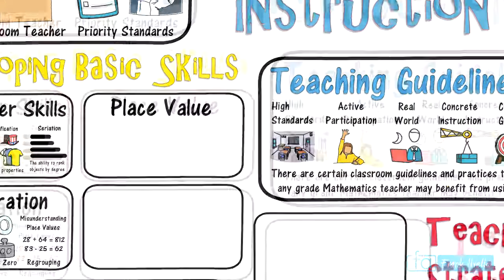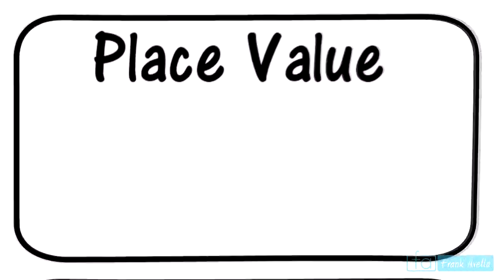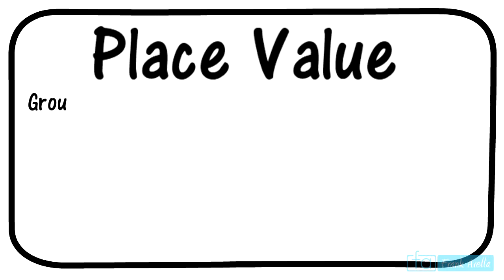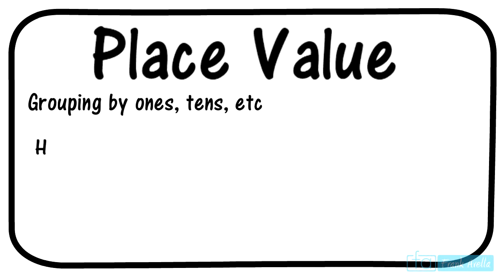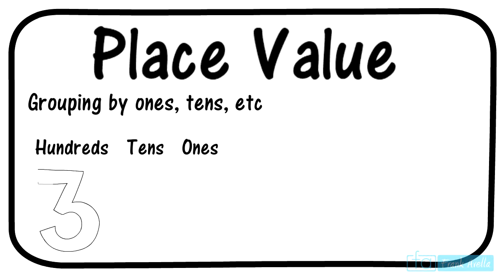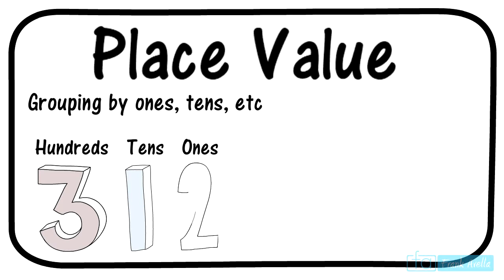This leads into the next topic: students can be taught through groupings of ones, tens, hundreds, and so forth. Take the number 312, for example. Students should know that the 3 is in the hundreds place, the 1 in the tens place, and the 2 in the ones spot. 312 can be named as three hundreds, one ten, and two ones.